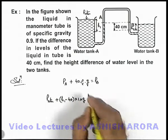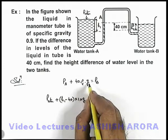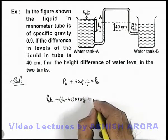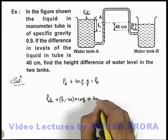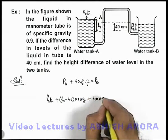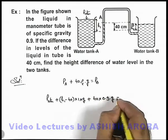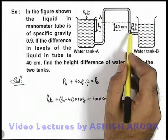Plus, 40 ρ liquid g is also given to us, so this can be written as 40 multiplied by density of liquid, which is 0.9 into g. And this should be equal to pressure at point B.